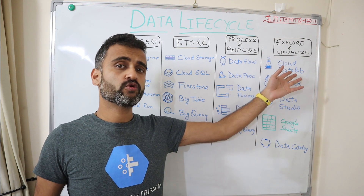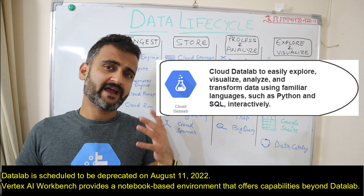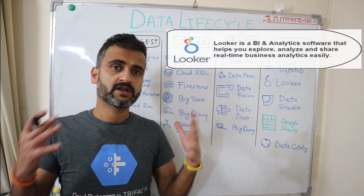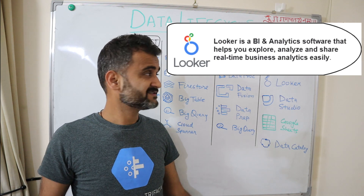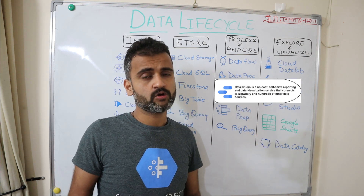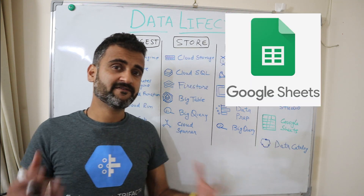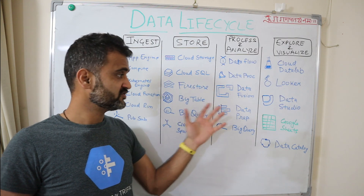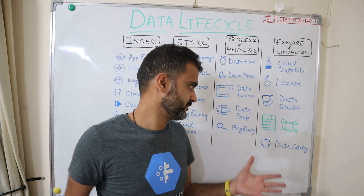Moving on to the last stage — explore and visualize: Datalab is a web-based tool built on Jupyter Notebook that helps us visualize and analyze data. Looker provides a visualization product — it was a separate company but has been merged with Google Cloud, similar to Tableau. Data Studio is Google Cloud's offering for creating visualization dashboards based on different data sources. Google Sheets is a different option, but you can use data from BigQuery and other sources directly in Google Sheets and interact with it through an Excel-like interface.